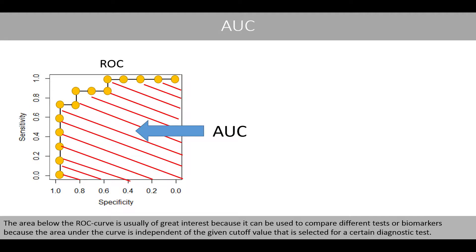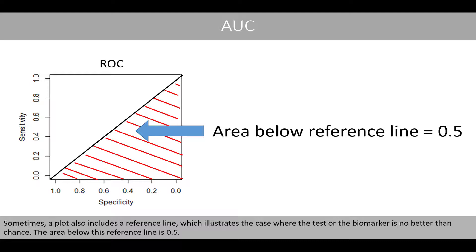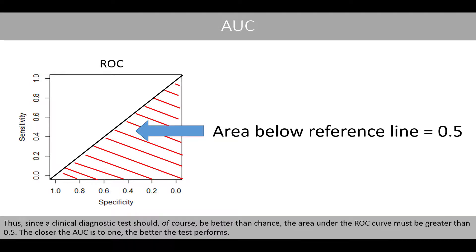The area below the ROC curve is of great interest because it can be used to compare different tests or biomarkers, as it is independent of the chosen cutoff value. The total area of the surrounding square is 1. Some plots include a reference line illustrating the case where the test is no better than chance, with an area of 0.5. Since a diagnostic test should be better than chance, the AUC must be greater than 0.5, and the closer it is to 1, the better the test performs.